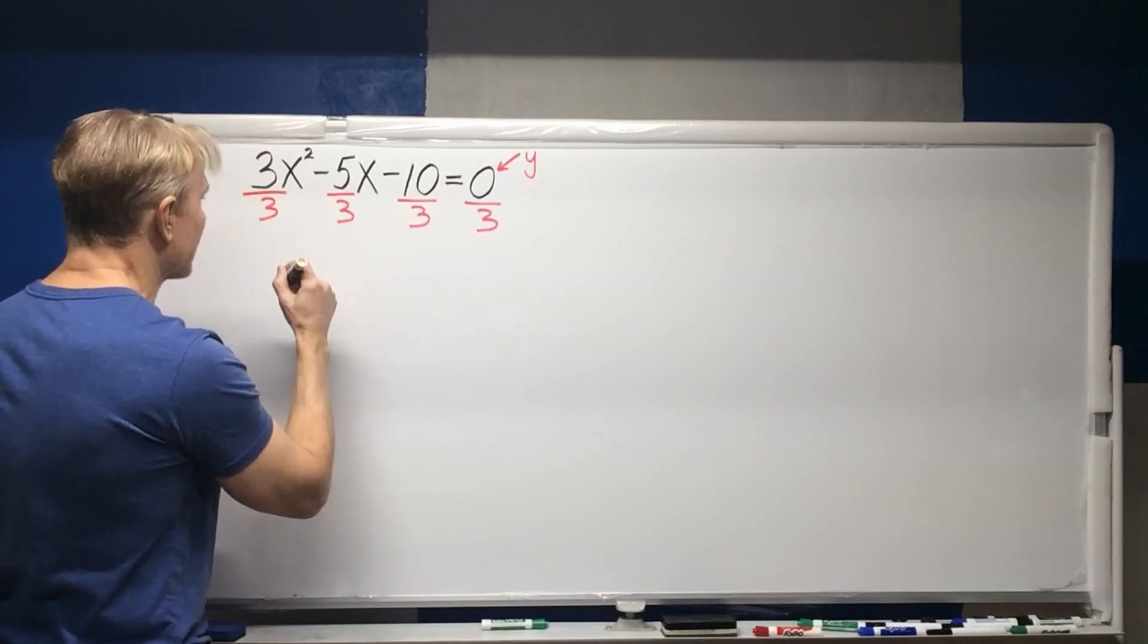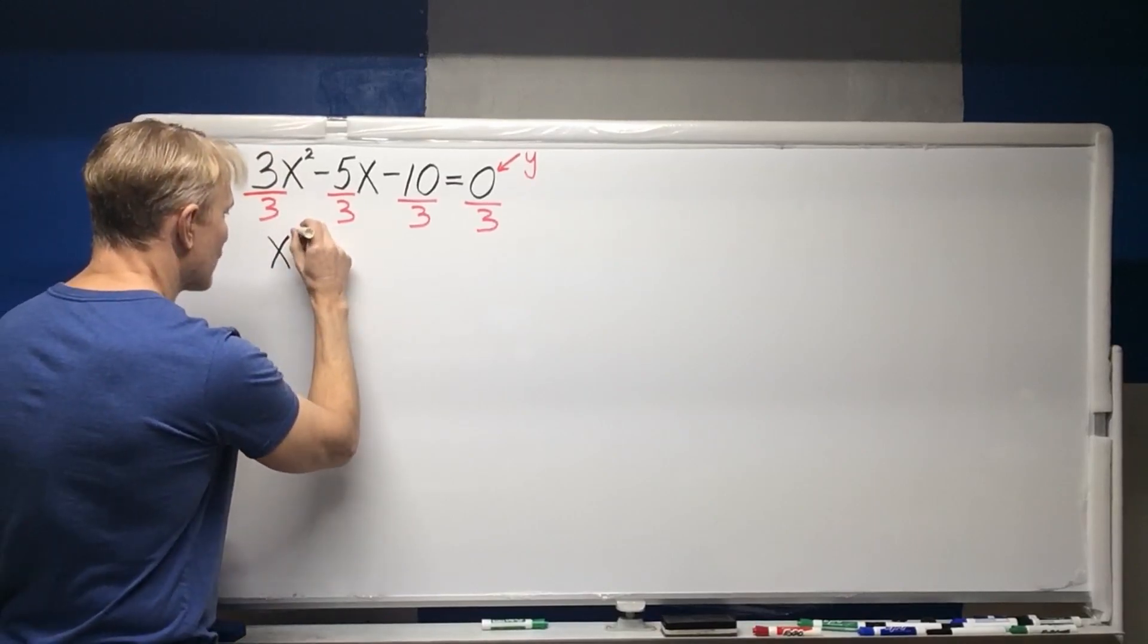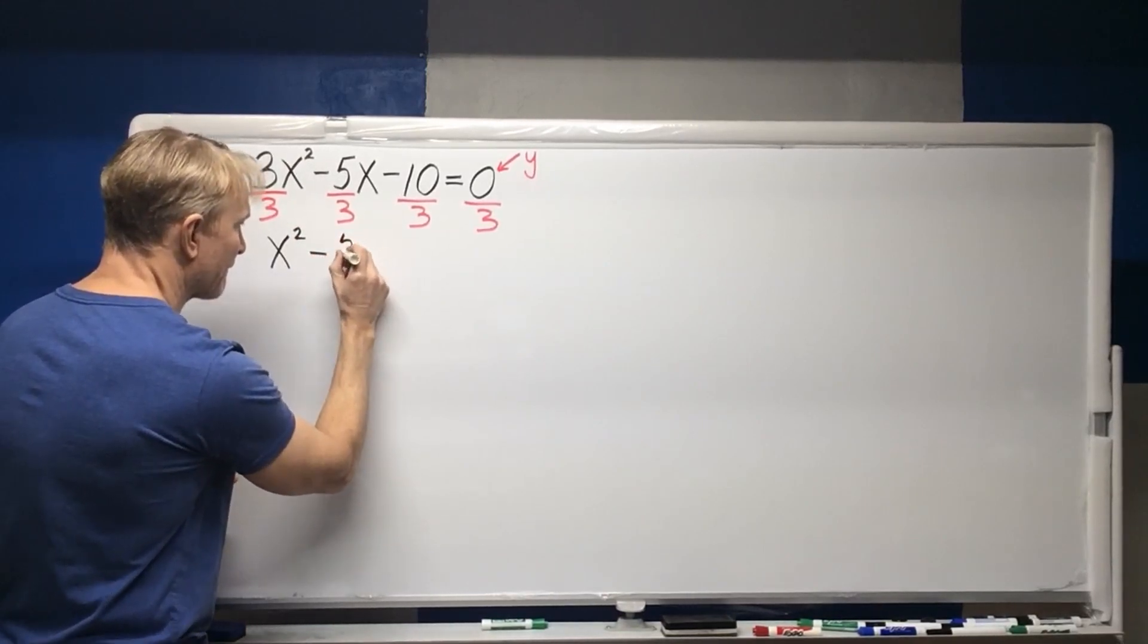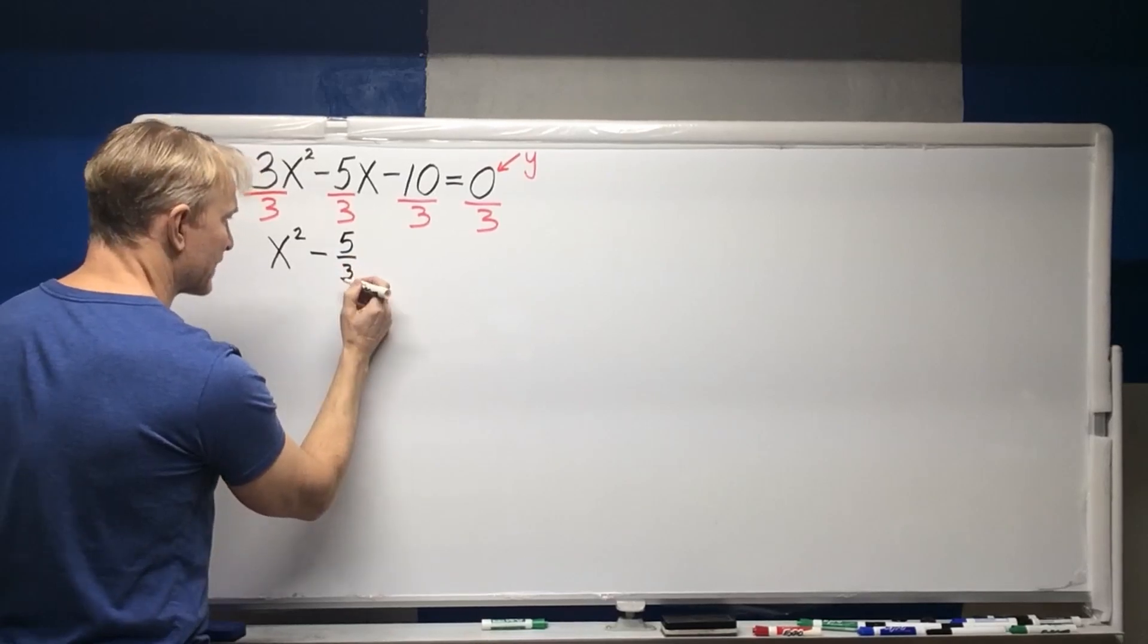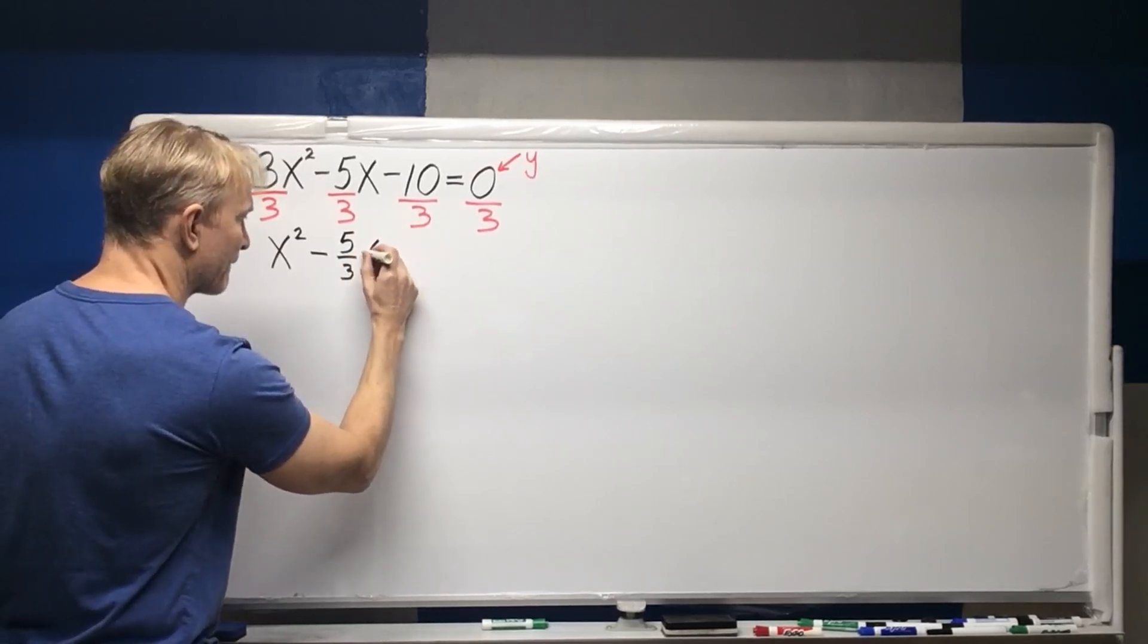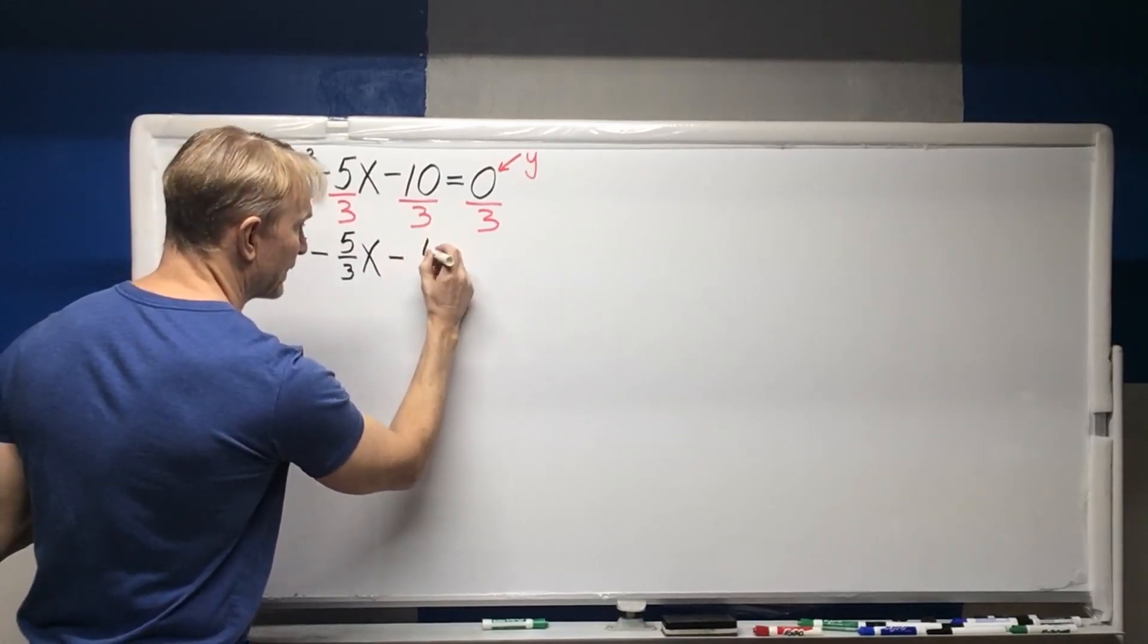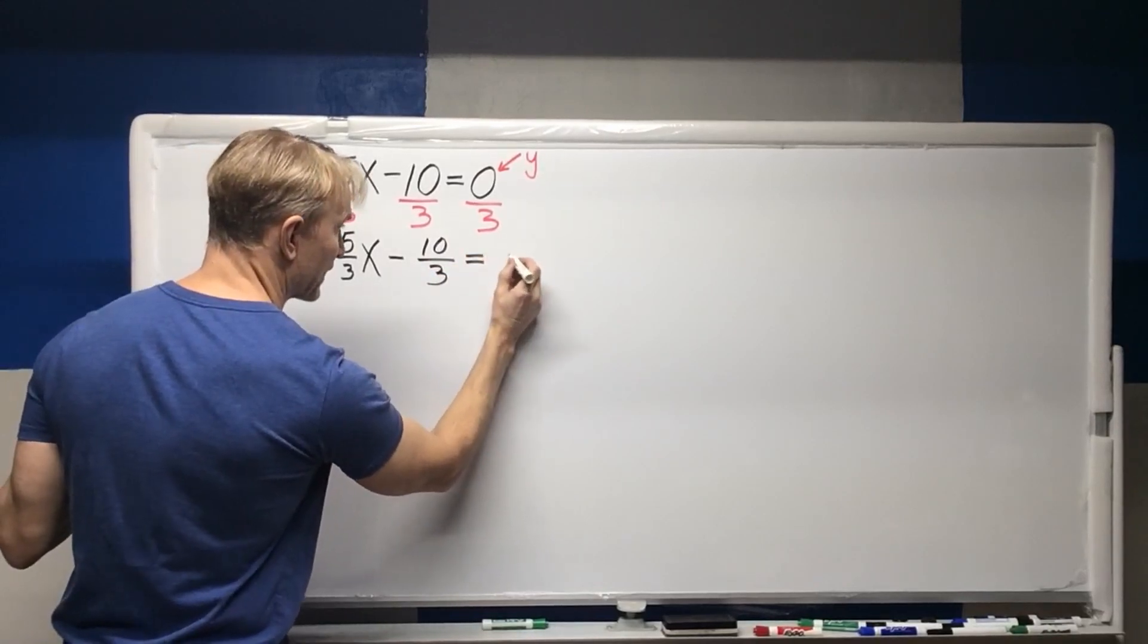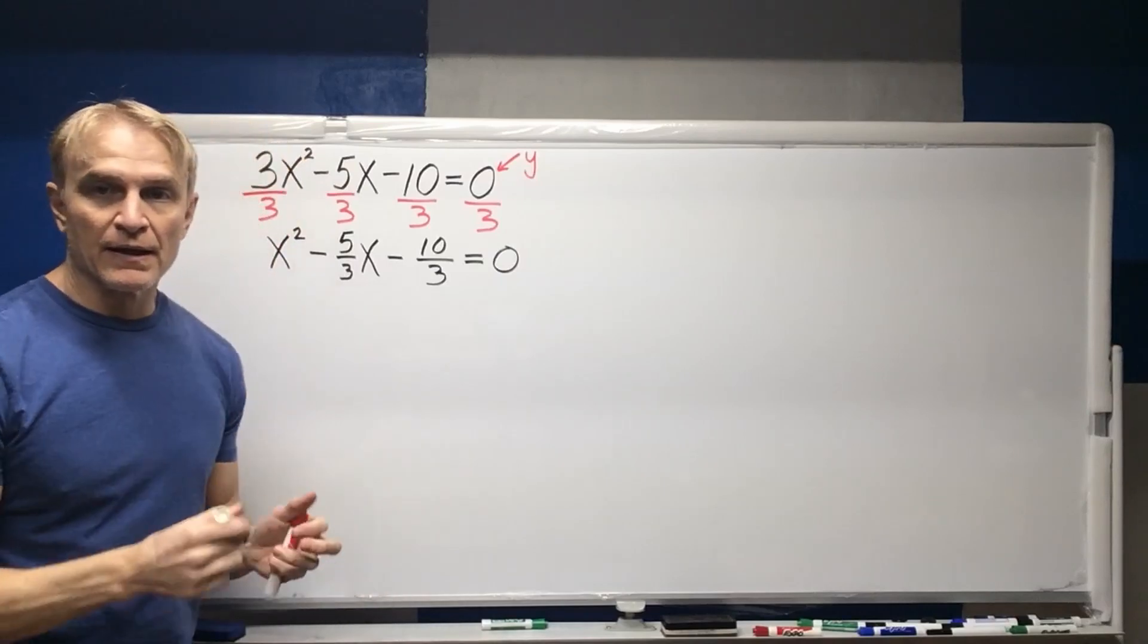And rewrite our new statement. So our new statement is x squared minus 5 thirds x minus 10 thirds equals 0.